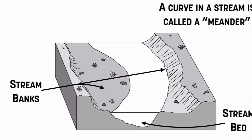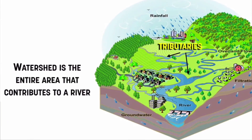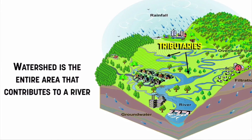If we look at all of the tributaries — those are the individual river systems that feed into one major river — we call that entire area a watershed. That's the entire area that contributes to a river.